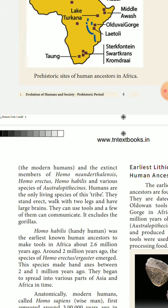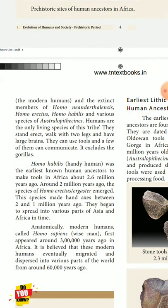Hominins stand erect, walk with two legs, and have large brains. The species Homo erectus emerged from around 2 million years ago.